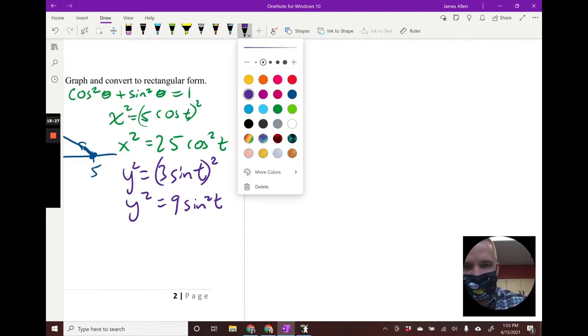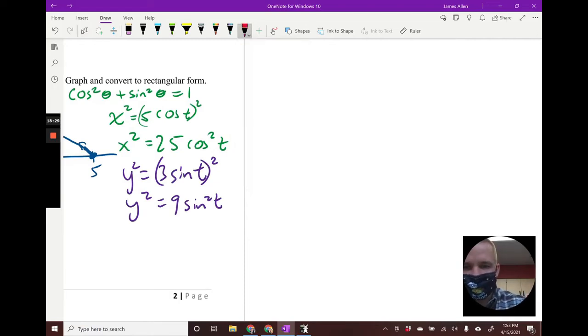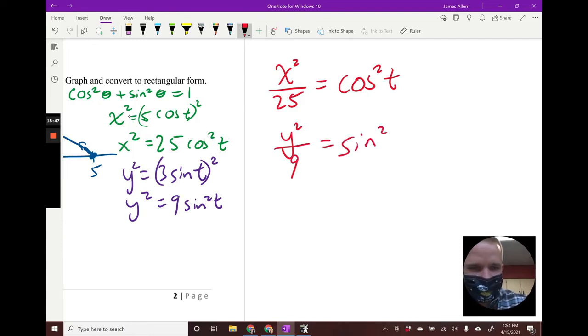I'm going to get cosine squared by itself, so I'd have x squared divided by 25 equals cosine squared t. I'll do the same thing for y - y squared divided by nine equals sine squared t. If I add these two equations together, I'm going to get cosine squared plus sine squared equals one.